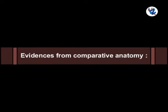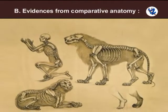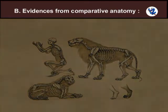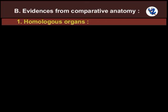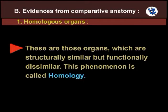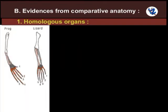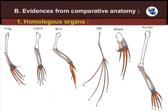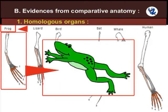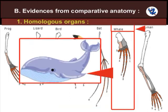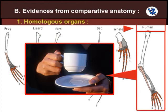Evidences from comparative anatomy: When structures of different groups of organisms are studied comparatively, they exhibit similarities indicating a common origin. Homologous organs are structurally similar but functionally dissimilar. For example, the four limbs of terrestrial vertebrates such as frog, lizard, bird, bat, whale and man are morphologically similar in construction but dissimilar in function — in frog for hopping, in lizards for crawling, in birds and bats for flying, in whales for swimming and in man for gripping objects.